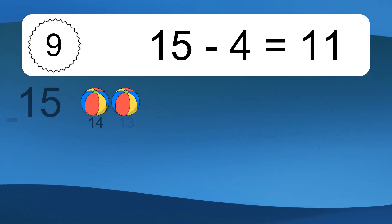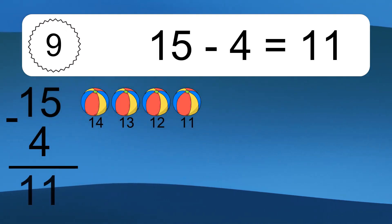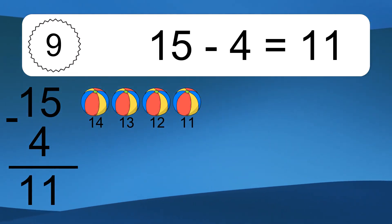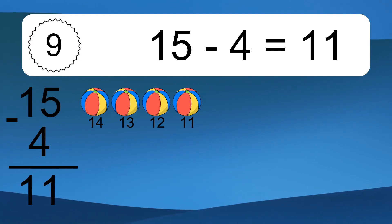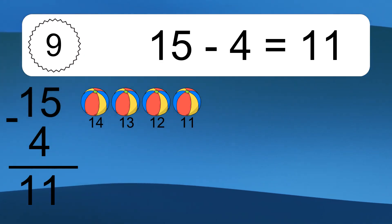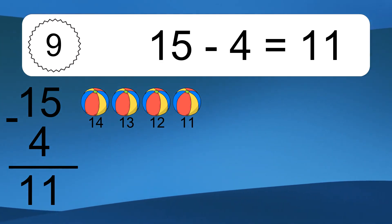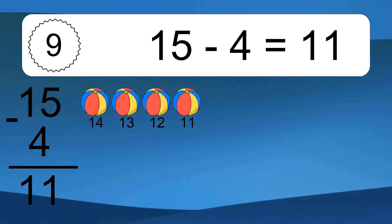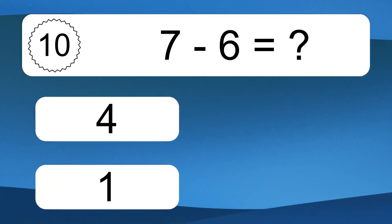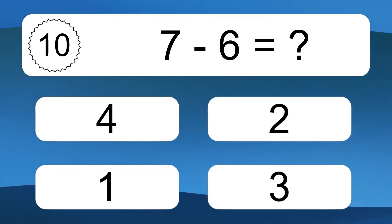15 minus 4 equals what? 15 minus 4 equals 11. Let's count it: 14, 13, 12, 11.